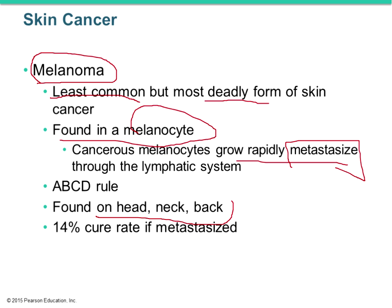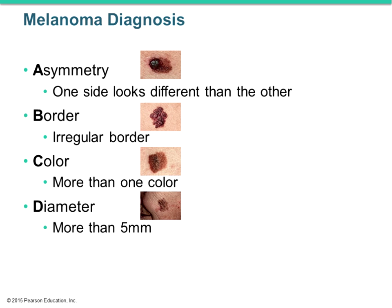There's the ABCD rule for distinguishing melanoma from other skin cancers. A is Asymmetry — one side looks different from the other. B is Border — it has an irregular, inconsistent border. C is Color — typically more than one color is present. D is Diameter — more than five millimeters. This overview helps determine if something is a melanoma, which is much more dangerous than other skin cancers.